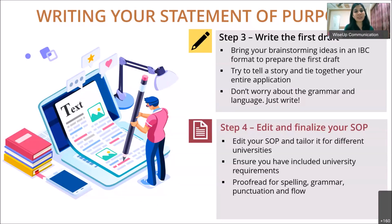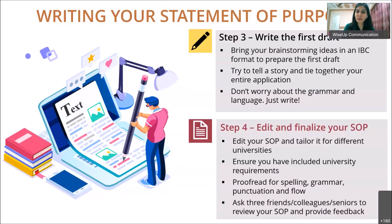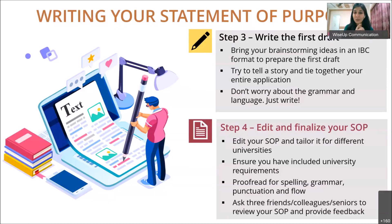Keep editing and removing anything not super important, going through this process again and again until you have the best version of your SOP. Then choose three people you trust who have a good command of English, ask them to review it and provide feedback, make the necessary changes, and you will have an SOP ready for submission. This entire process can take up to one month, so don't wait until September or October — start early.